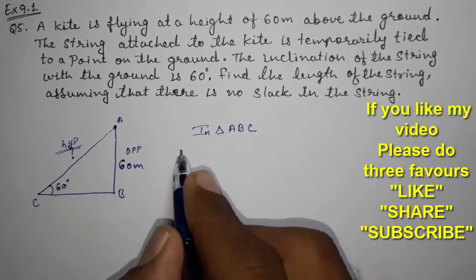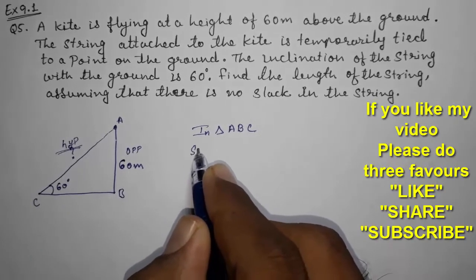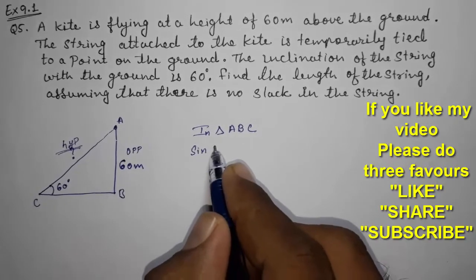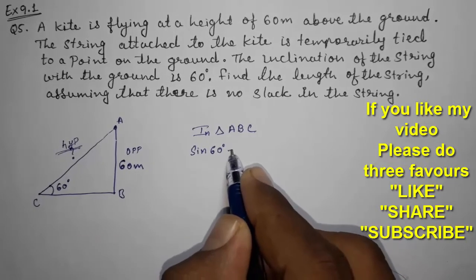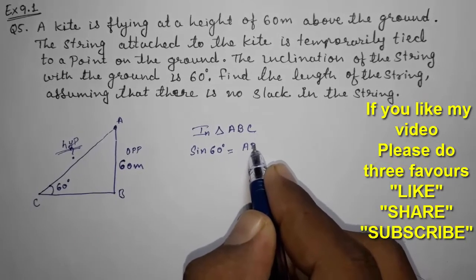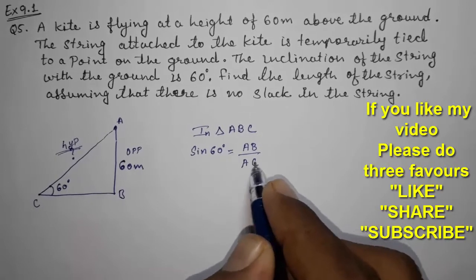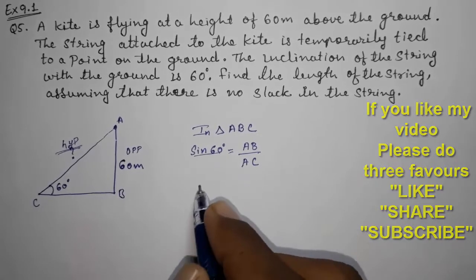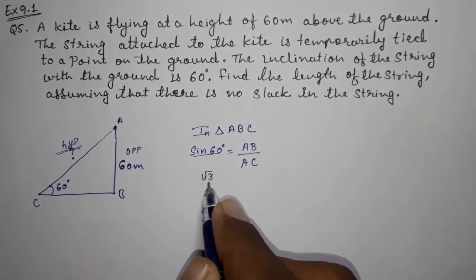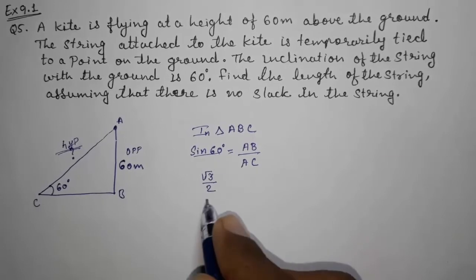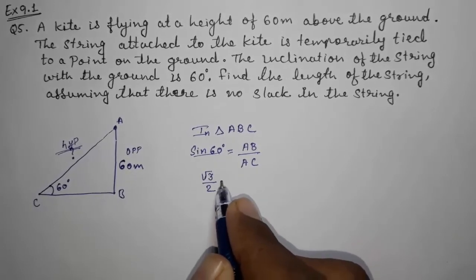So opposite by hypotenuse, that is sine. The degree is given to you, so sin 60° equals opposite, that is AB, by hypotenuse, that is AC. Now the value of sin 60°, that is √3/2. You have to memorize all these values, then only you will be able to solve this.